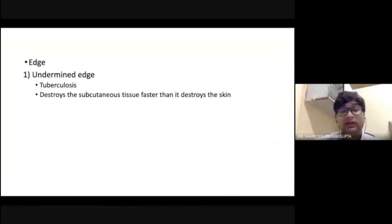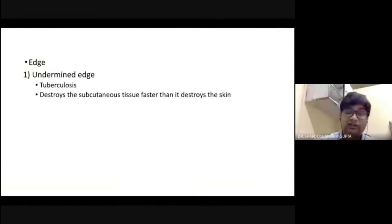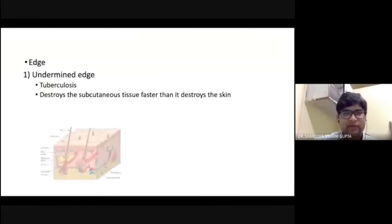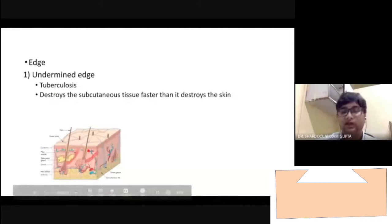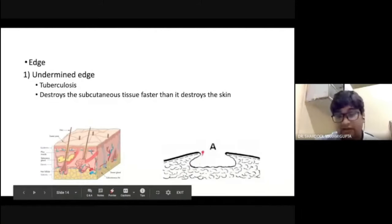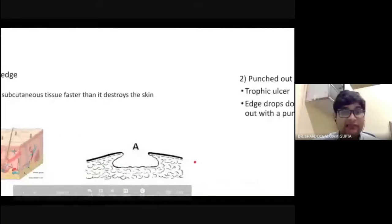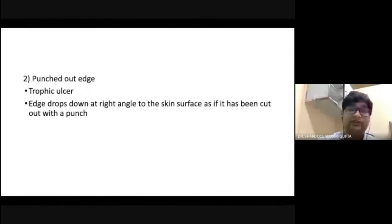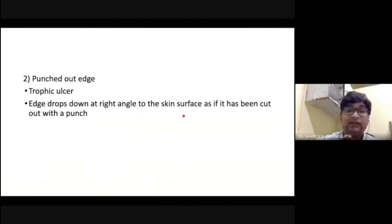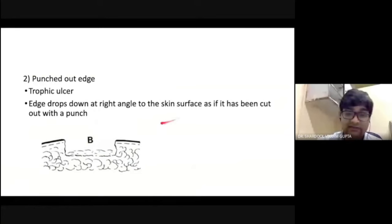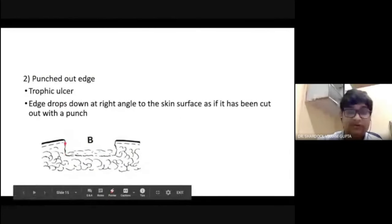Now coming to the edge of the ulcer. The types of edges are: undermined edges, usually seen in tuberculosis — because the disease process destroys the subcutaneous tissue faster than the skin, so subcutaneous tissue destruction is much greater and the edges become undermined. The second type is the punched-out edge, as if something has been punched out, seen in trophic ulcers — the edge drops at a right angle to the skin surface as if cut with a punch.